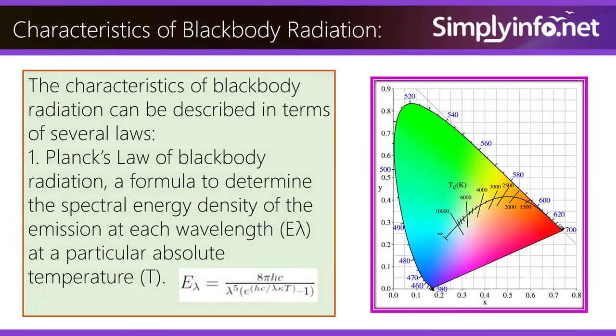Characteristics of Blackbody Radiation: The characteristics of blackbody radiation can be described in terms of several laws. First, Planck's Law of Blackbody Radiation — a formula to determine the spectral energy density of the emission at each wavelength at a particular absolute temperature.